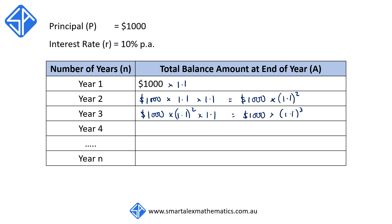And again, the same thing happens in year four. We now start with 1,000 times 1.1 cubed, and we're going to multiply by 1.1 because again, it increases by another 10%. So the final balance at the end of year four now becomes 1,000 times 1.1 to the power of four.